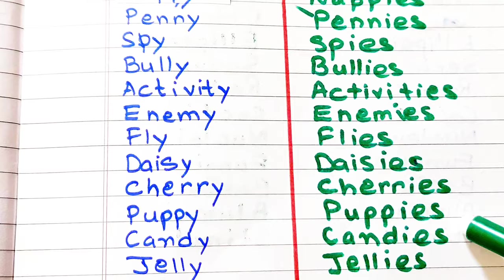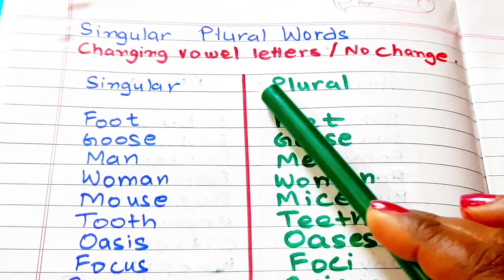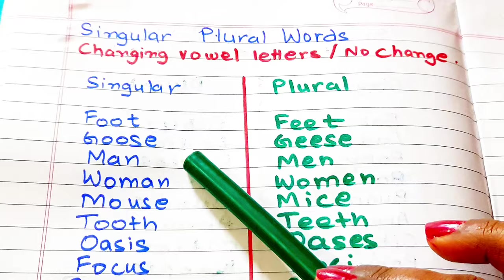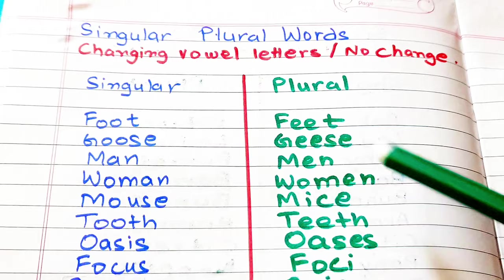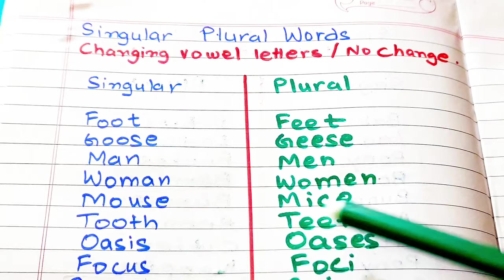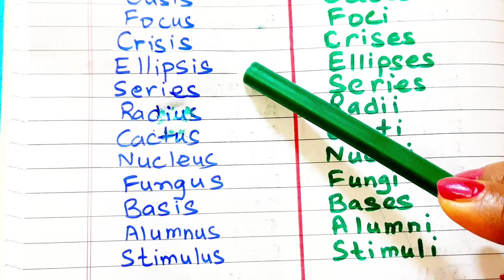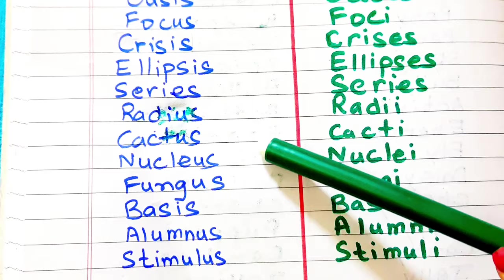Now here are some singular words which are changed into plural by changing in vowel letters or no change in them, like foot, feet. Goose, geese. Man, men. Woman, women. Mouse, mice. Tooth, teeth. Oasis, oases. Focus, foci. Crisis, crises. Ellipsis, ellipses. Series, series. Radius, radii. Cactus, cacti.